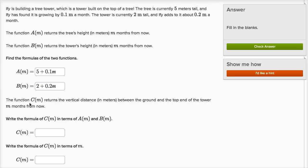The function C of m returns the vertical distance between the ground and the top end of the tower. That would be from the bottom of the tree to the top of the tower.